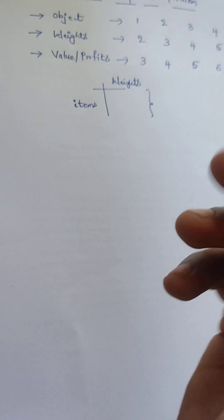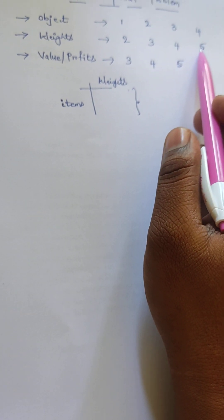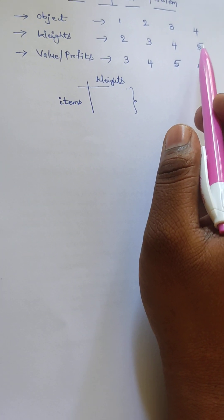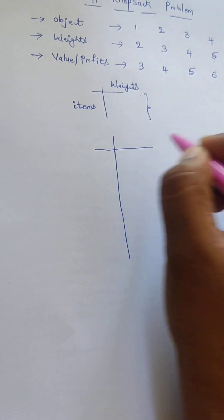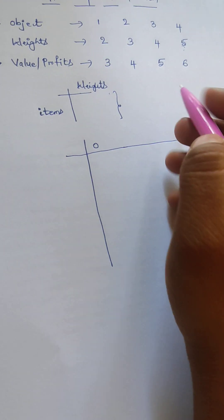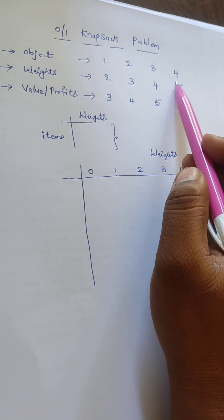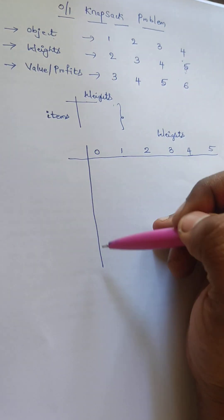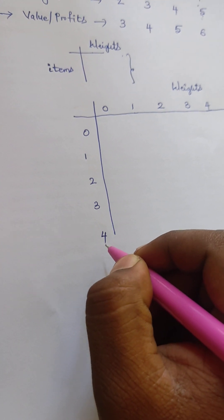We have weights 2, 3, 4, and 5, so the maximum weight is 5 and the minimum is 0. That is why we start weights from 0 up to the maximum weight: 0, 1, 2, 3, 4, and 5. Similarly, for the number of objects the maximum is 4 and the minimum starts from 0, so items go from 0 to 4.